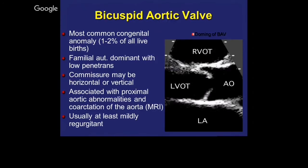Bicuspid aortic valve is the most common congenital anomaly with over 1 to 2% of all live births. There's some data to suggest that it might be familial with autosomal inheritance and a very low penetrance. The commissures may be horizontal or vertical. We're beginning to realize that it's a form of valvulopathy — it's not just the valve. It's associated with proximal aortic abnormalities, and when you see it you should always try to rule out coarctation of the aorta or dilatation of the aorta.